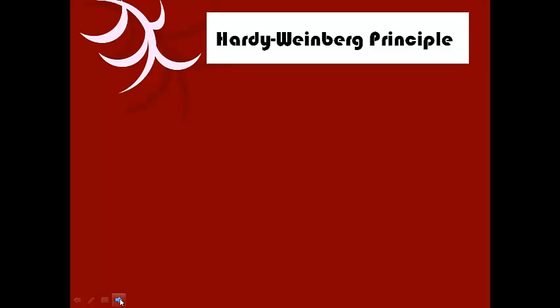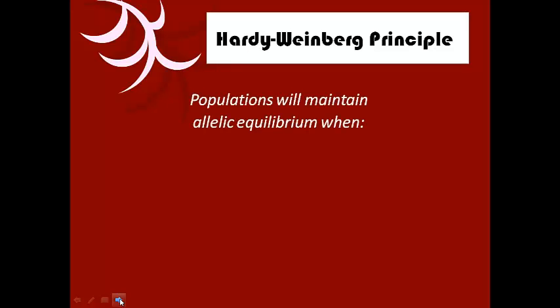To start looking at how populations actually evolve or change over time, we need to start by looking at what happens when they aren't changing — when no evolution is taking place. That's what we're going to be looking at with the Hardy-Weinberg principle, named after the scientists Hardy and Weinberg who worked out this idea.